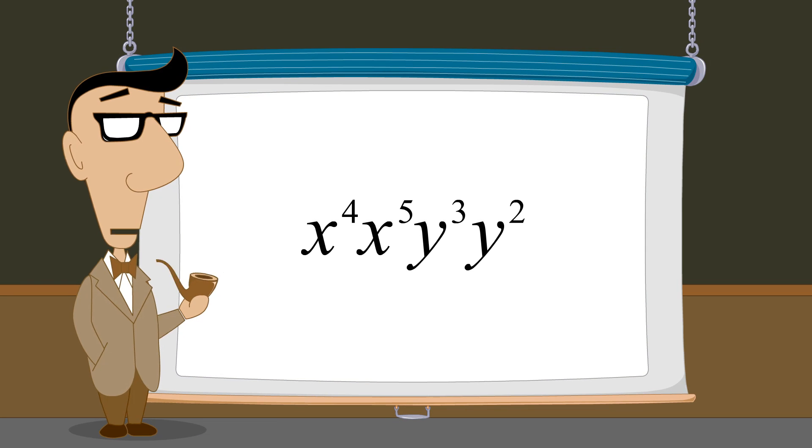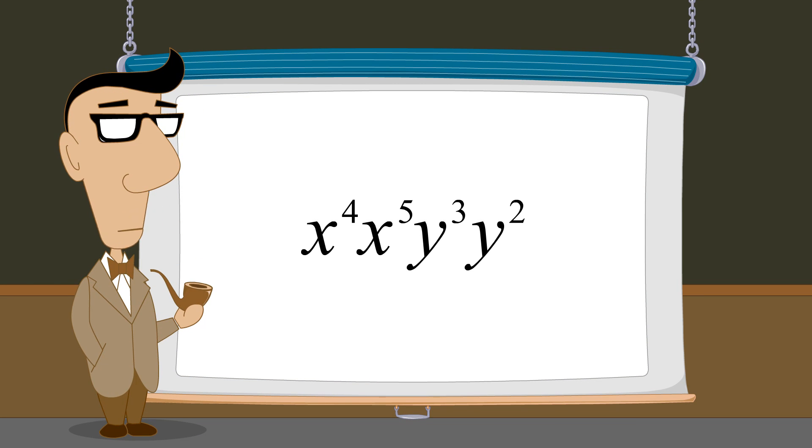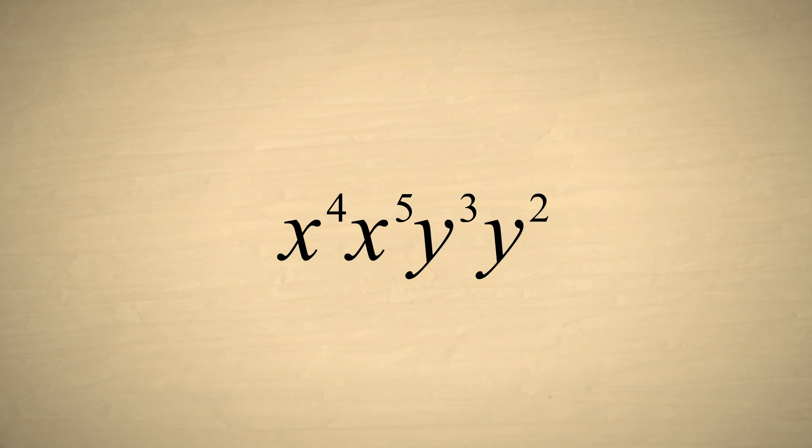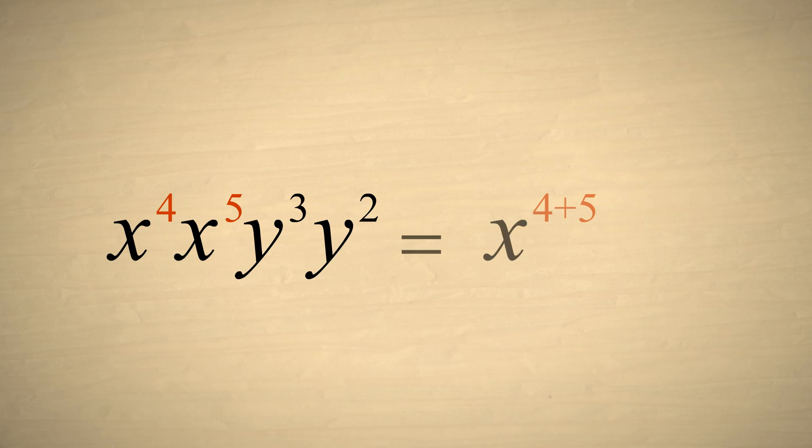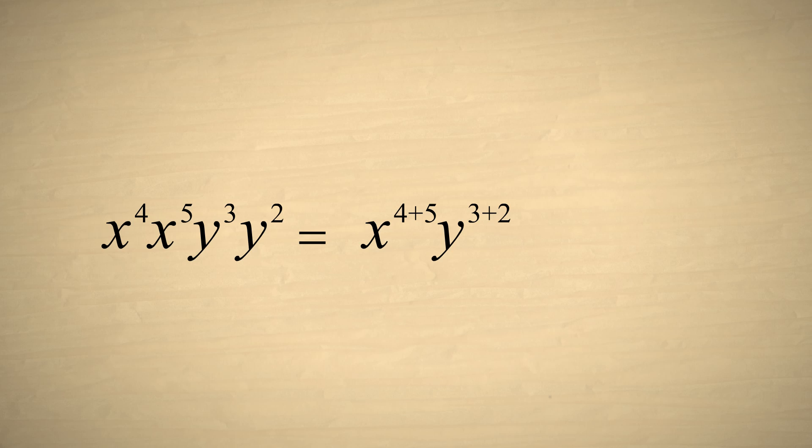Let's try an example with two different variables. Remember that we can only add exponents of terms whose bases are the same. Therefore, we can add the exponents for the x's and the exponents for the y's, but we cannot combine the x and y terms. The result is x to the ninth times y to the fifth.